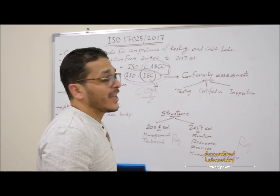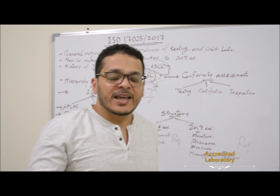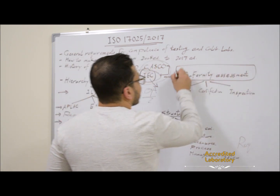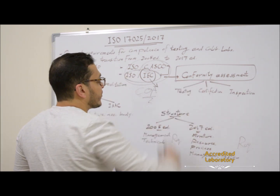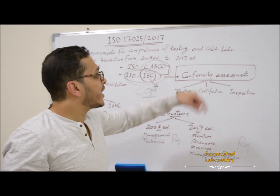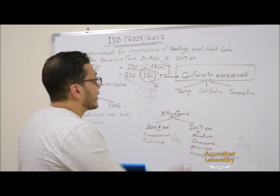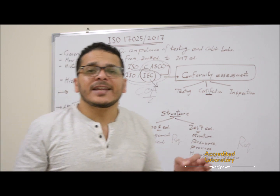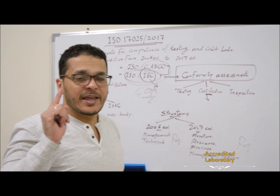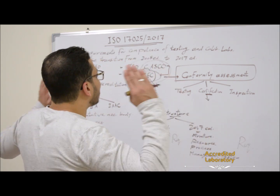What does conformity assessment mean? Conformity assessment is how to assess a laboratory to ensure that it is competent enough to perform all analyses with accurate and reliable results. This field — conformity assessment — has three main forms: testing, certification, and inspection. Testing is the determination of one or more parameters, which are laboratory activities. Certification is the provision by an independent body of a written assurance — a certificate — confirming that you are able to perform all analyses according to international guidelines and that you meet all requirements of ISO 17025.